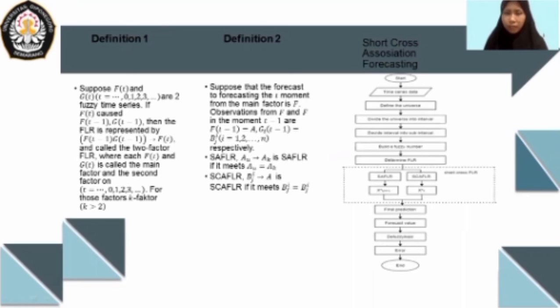Then from this method we find two kinds of FLR. FLR number one is SAFLR, and FLR number two is SCAFLR, as we can see in Definition number 2. The flowchart of short cross association forecasting, as we can see on the screen.